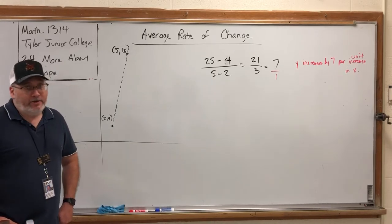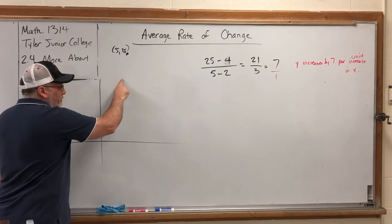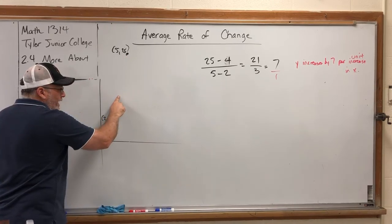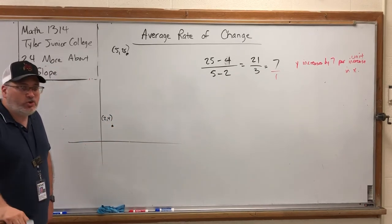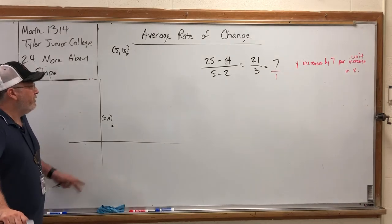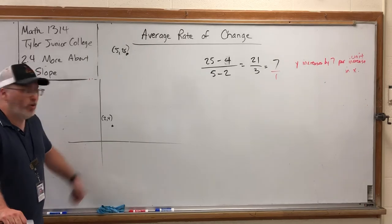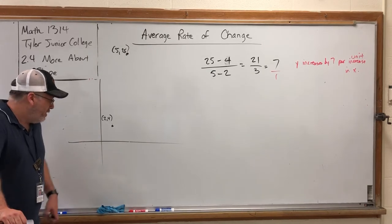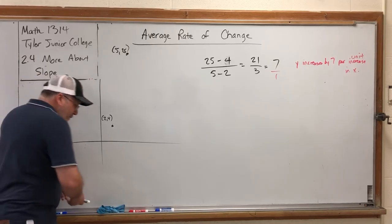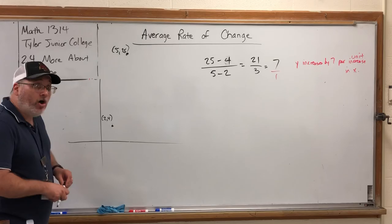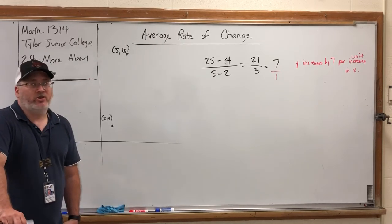But what if I told you that the graph connecting these two points was not a line at all? I didn't pick these two points because they belong to a line. I picked them because there's something you can do to each x to turn it into each y. There is a line that goes through these, but the function I had in mind was not linear at all.